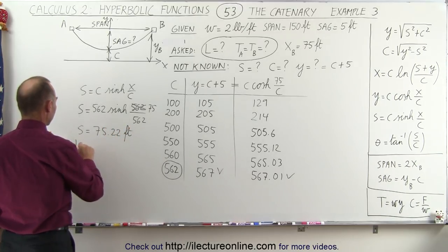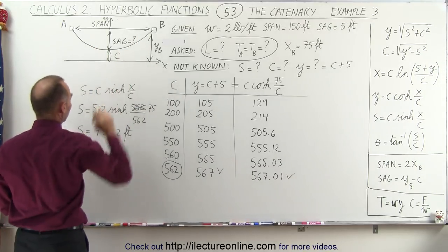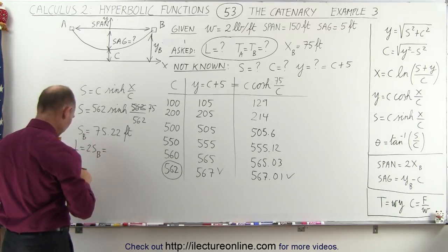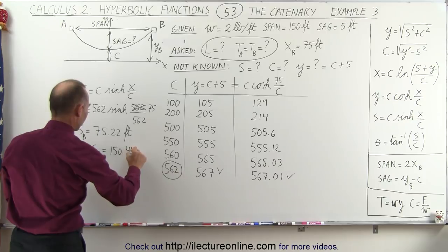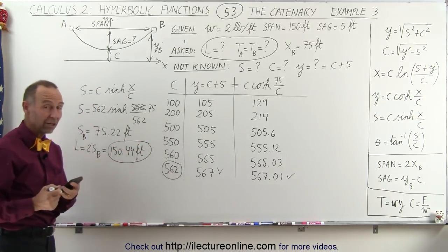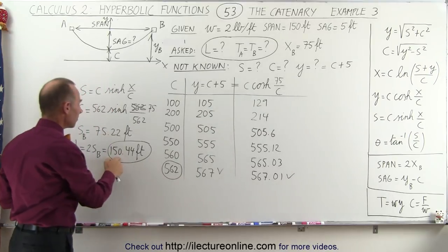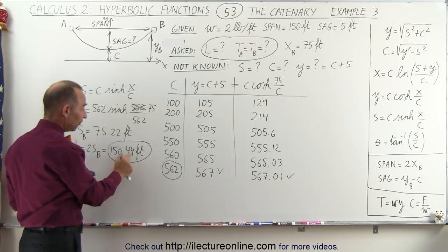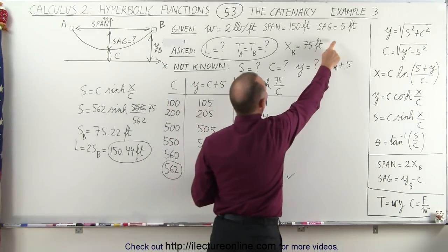And we know that L is equal to, and this would be s at b, of course. That will be the full distance from the bottom of the cable all the way to the support. So the total length of the cable will be two times s_b. So multiply times two and we get 150.44 feet, which is the full length of the cable between two supports, which is interesting. You're trying to cover a span of 150 feet. You can do that with a cable that's 150.44 feet, that's just slightly less than a half a foot more, and you'll have a sag of five feet.